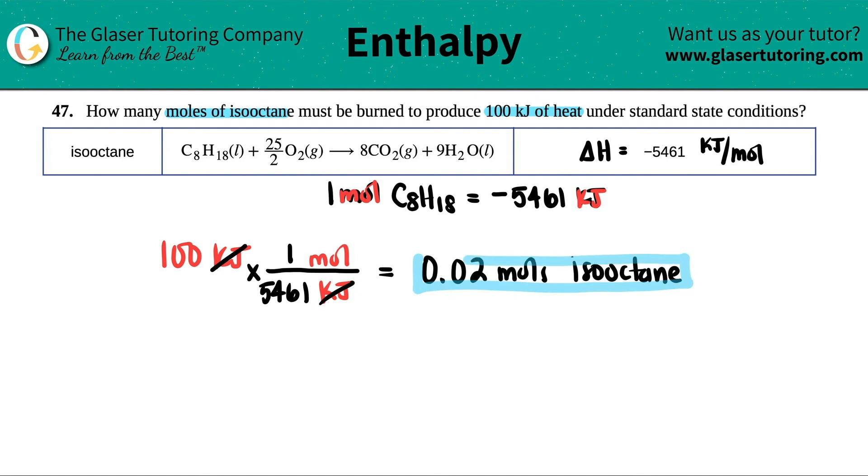But that's it, guys. We answer the question. So how many moles am I going to need in order to produce 100 kilojoules? Only 0.2 moles. That's it.